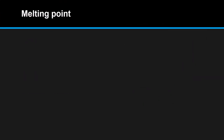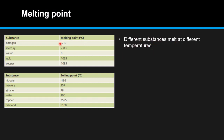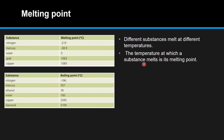Next, let's talk about melting point. I have two tables here showing melting points and boiling points. The melting point and boiling points are different values, even though the substances listed are the same. For example, nitrogen has a melting point of minus 210 degrees Celsius and a boiling point of minus 196 degrees Celsius. The temperature at which a substance melts is its melting point, and every substance has its own melting point.